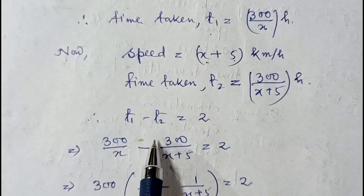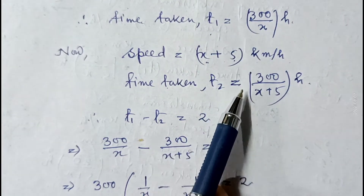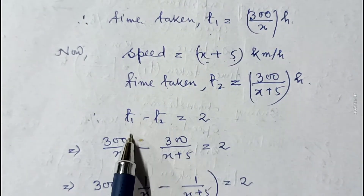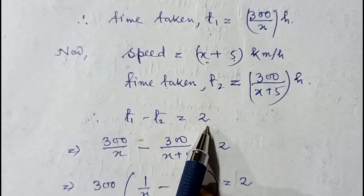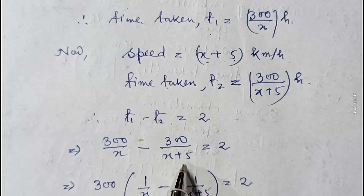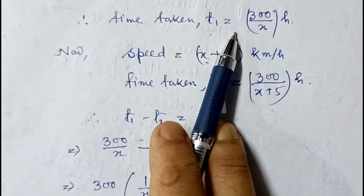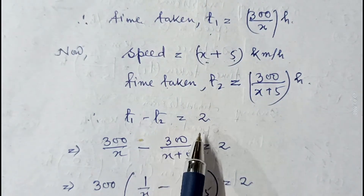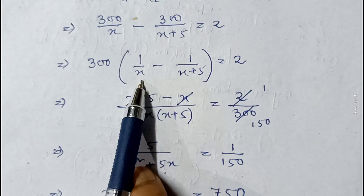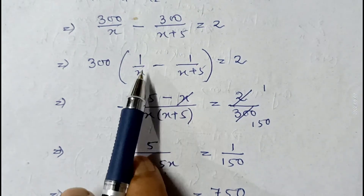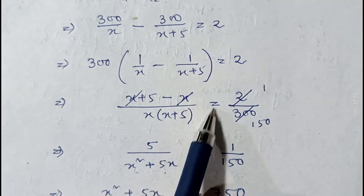When speed is increased by 5 km/h, the train takes 2 hours less, so t1 minus t2 equals 2: that is 300/x minus 300/(x plus 5) = 2. Taking 300 common: 300 × [1/x minus 1/(x plus 5)] = 2. Taking LCM x(x plus 5): we get (x plus 5 minus x) / [x(x plus 5)] = 2/300, which simplifies to 5/[x(x plus 5)] = 1/150.